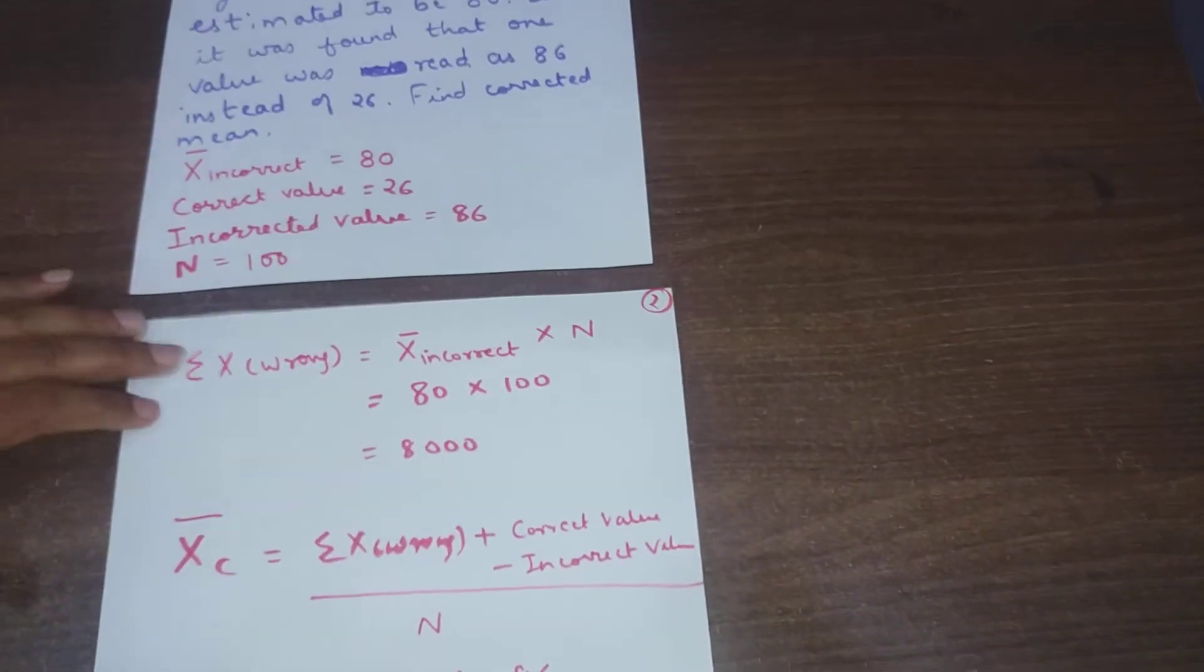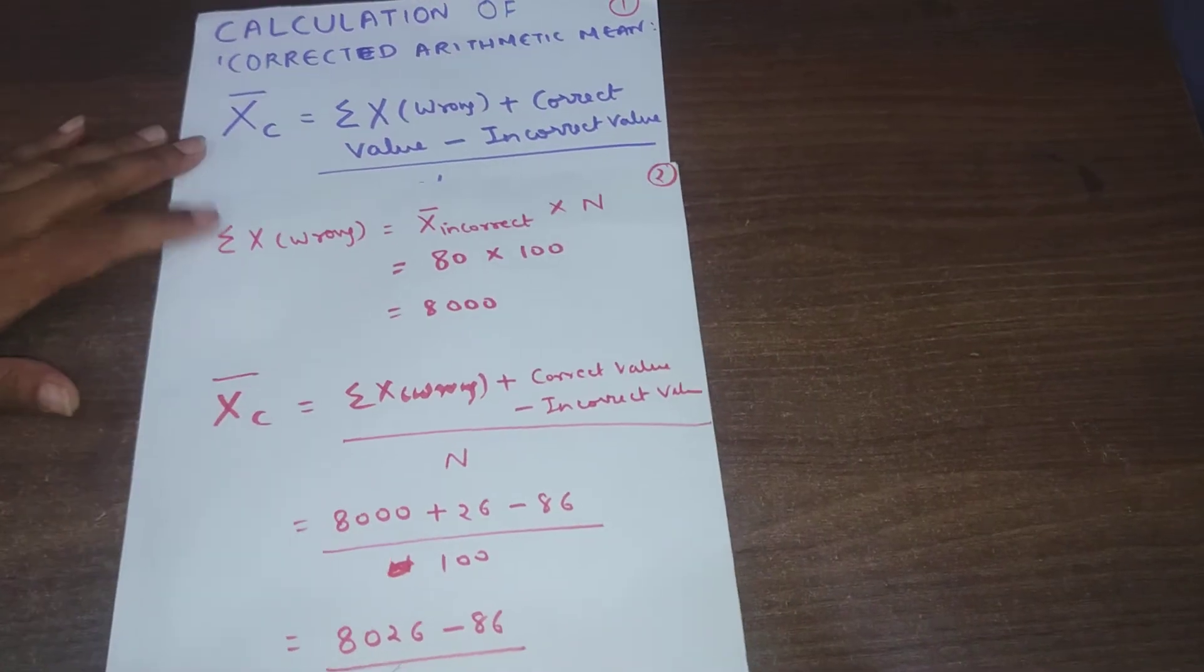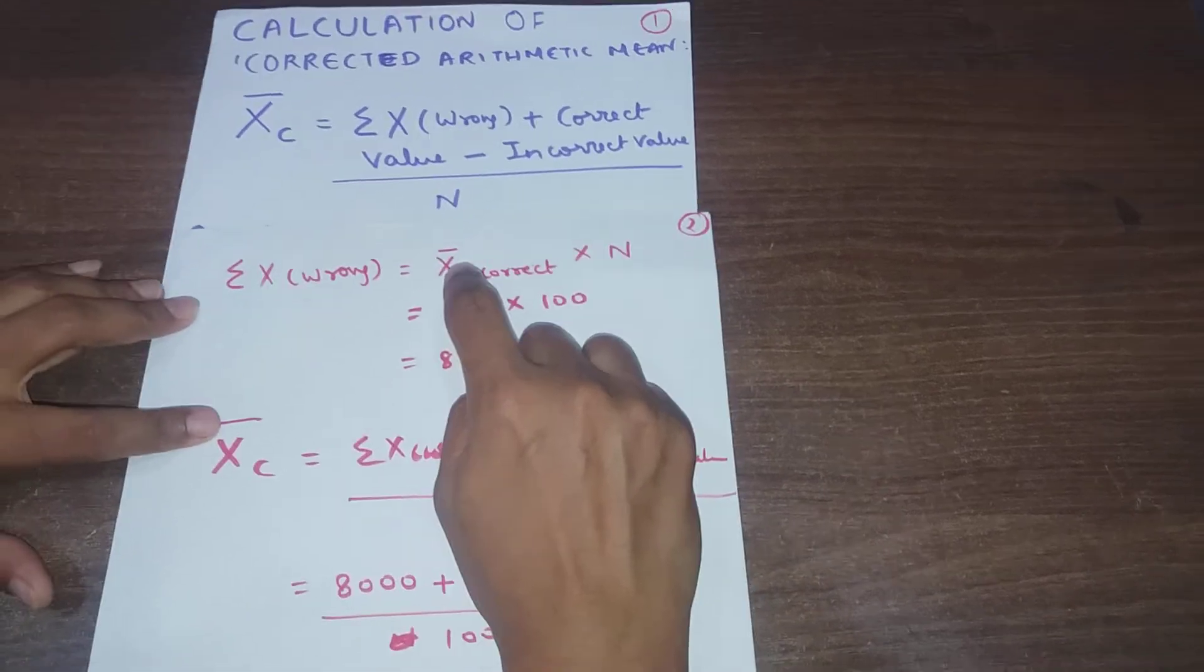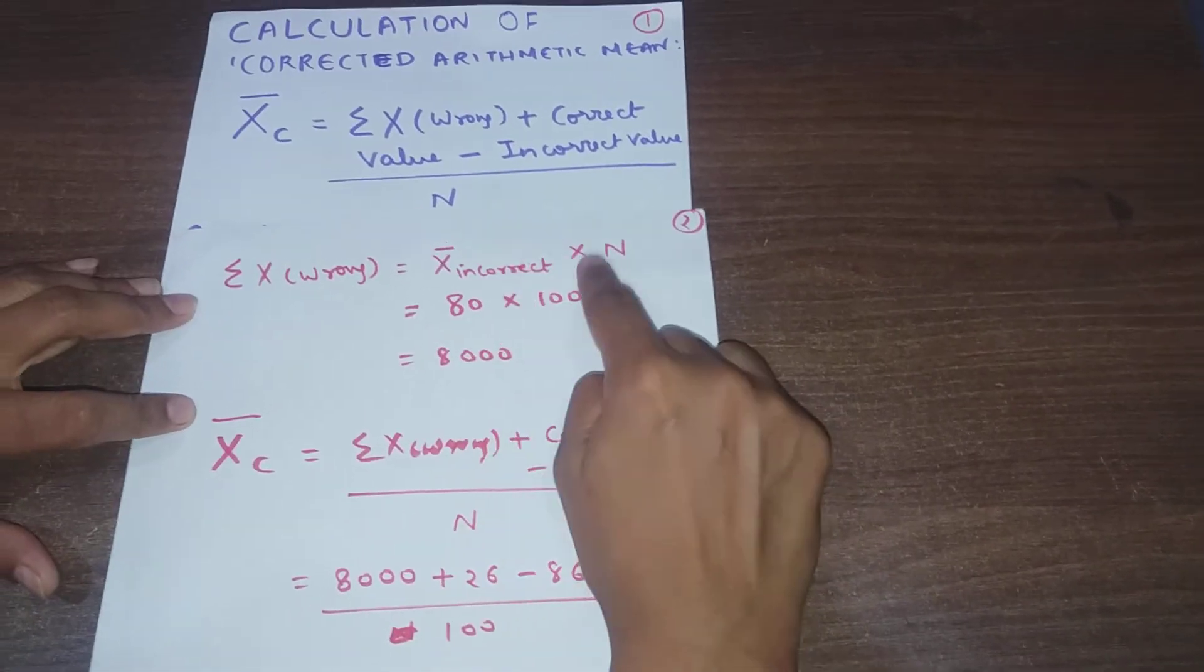First of all, if you see in the formula, you want summation of x wrong. How will you get it? By multiplying x̄ incorrect to n.